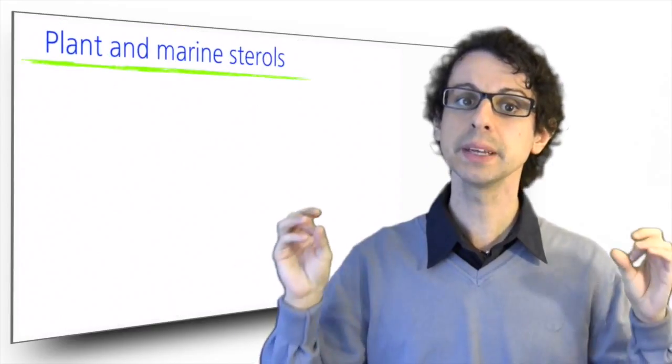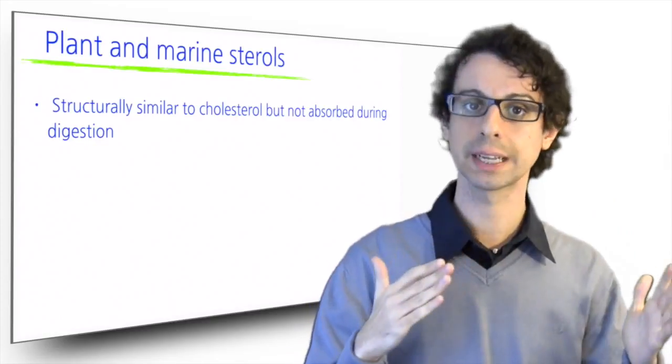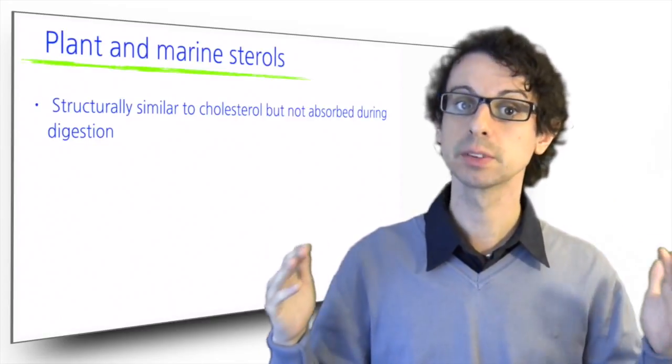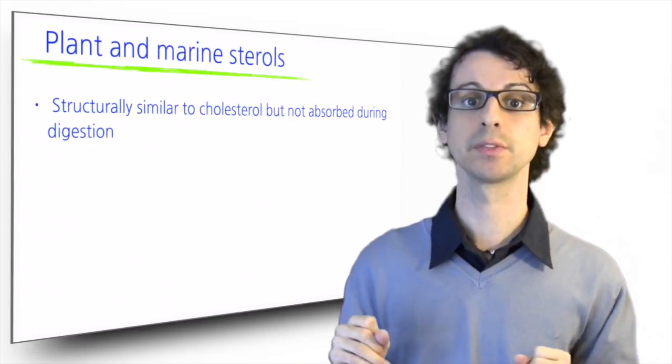Plant sterols like beta-sitosterol, which is the most abundant, are structurally similar to cholesterol, but we normally cannot absorb them, so they are not considered nutrients and we could see them as a particular type of fiber.